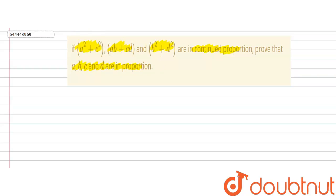So start this question by writing. We are given that a² plus c², ab plus cd and b² plus d² are in proportion.